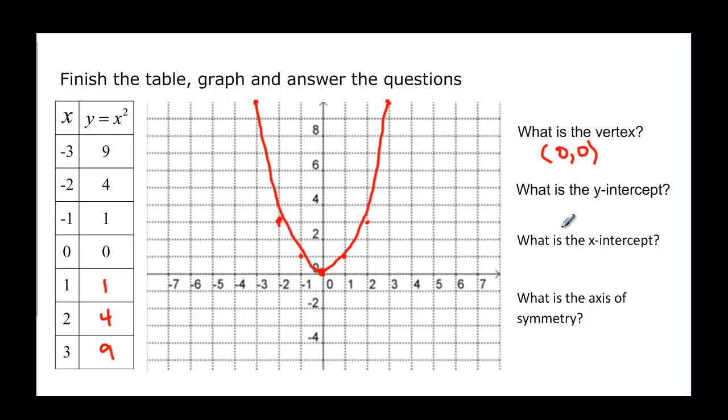What's the y-intercept? Where it crosses the y-axis is also 0, 0. What's the x-intercept? Again, where it crosses the x-axis is also 0, 0. That doesn't always happen.